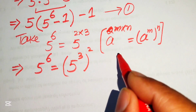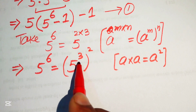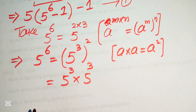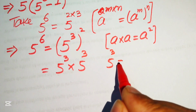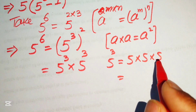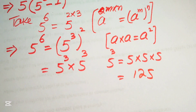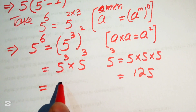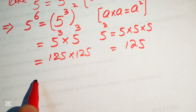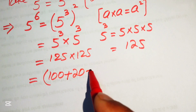We know that if we have a multiplied by a, we write it as a squared. So for 5 to the power of 3 squared, we write 5 to the power of 3 multiplied by 5 to the power of 3. Since 5 to the power of 3 means multiplying 5 three times: 5 times 5 is 25, and 25 times 5 is 125. So we need to compute 125 times 125, and we break 125 as 100 plus 20 plus 5.